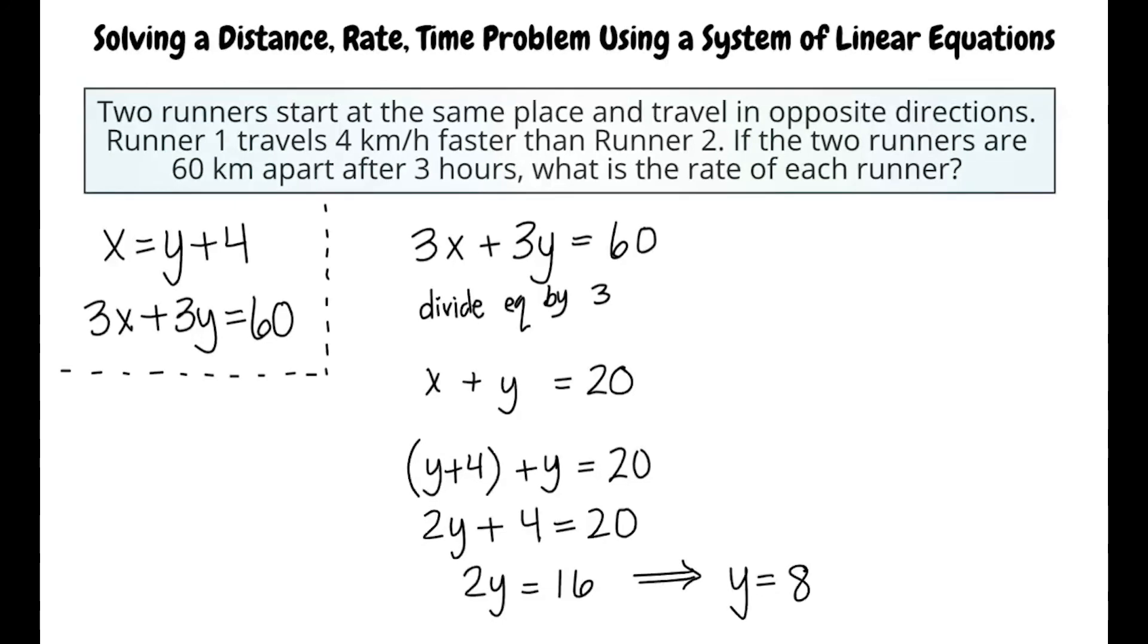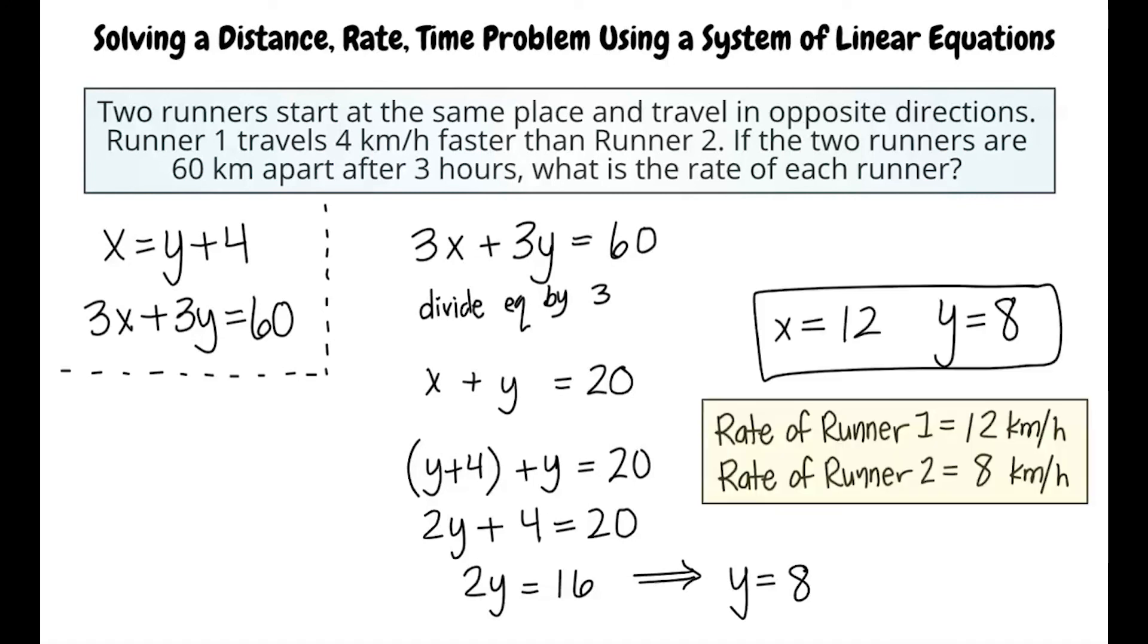Great work. You did get the same answer using this method. Since the numbers were smaller, the second method may be a little easier. You have done well. This solution, x equals 12 and y equals 8, means that the rate of runner 1 is 12 kilometers per hour and the rate of runner 2 is 8 kilometers per hour.